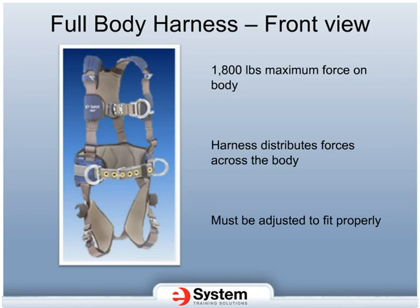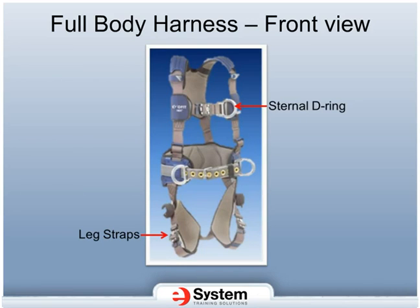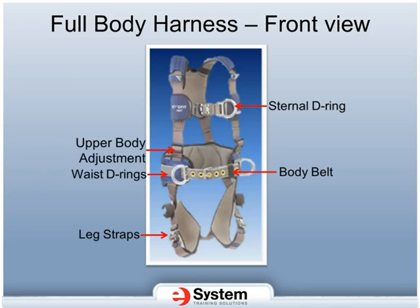Failure to wear a harness correctly can result in severe injury under normal fall conditions. Some features of the harness include the sternal D-ring, which can be used for rescue or attaching to a fixed safety climb system on a ladder. Leg straps should be worn high on the thigh and not sagging down towards your knees — slack in the leg straps makes it more difficult to climb and won't help distribute forces of a fall. The belt on this harness is for tools and positioning and is not part of the primary fall protection system. The waist D-rings are used for attaching a positioning belt, and the upper body adjustment should be used to ensure your harness has a snug but comfortable fit.